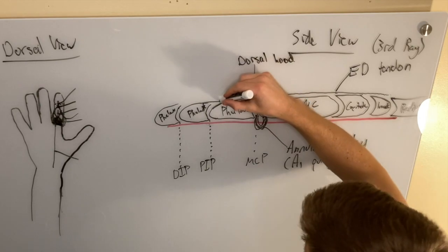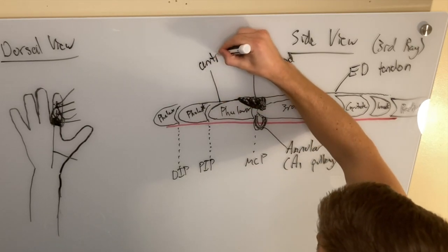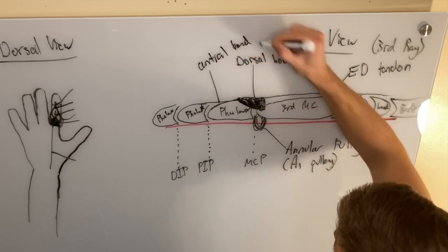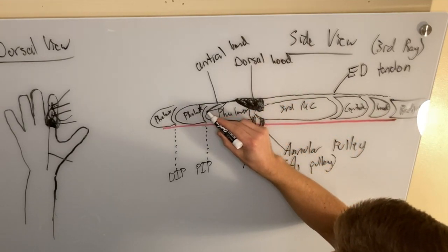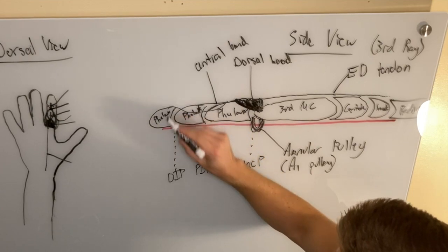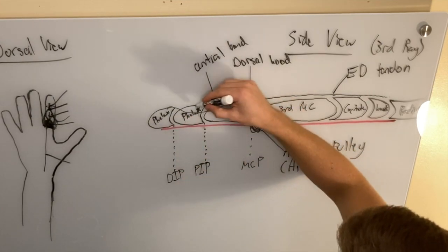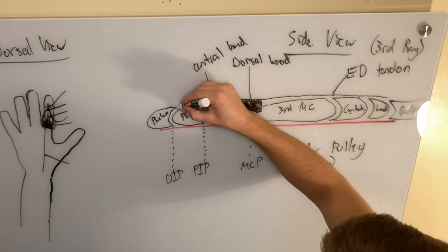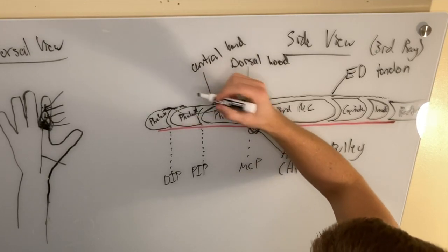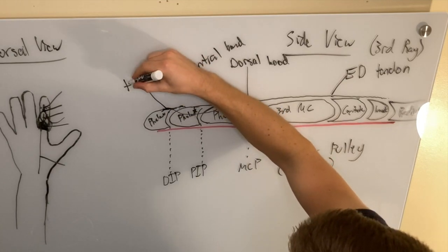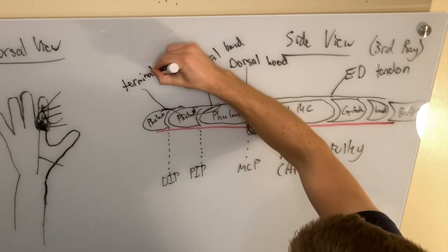This is the central band. And before it crosses the PIP joint, you have these lateral bands, which come together and form the terminal tendon, terminal or the terminal band, either one. Terminal band.